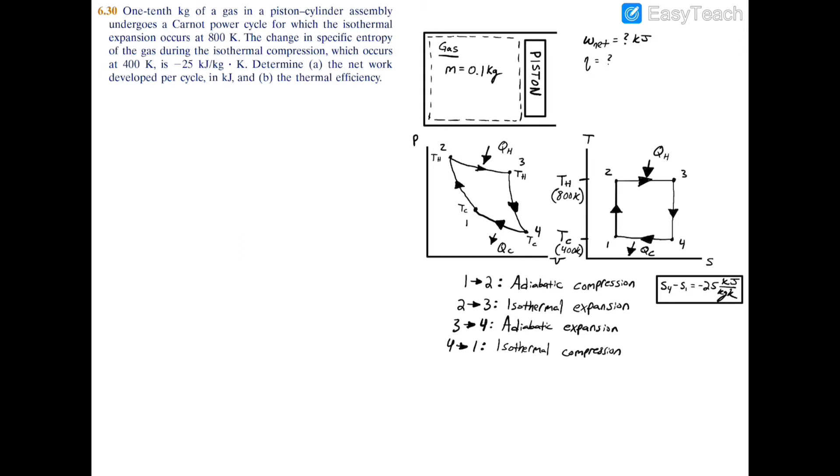Process 3-4 is adiabatic expansion, so again we have no heat transfer. Temperature decreases from T3 (T_hot) to T4 (T_cold). Entropy is conserved, so S3 = S4.